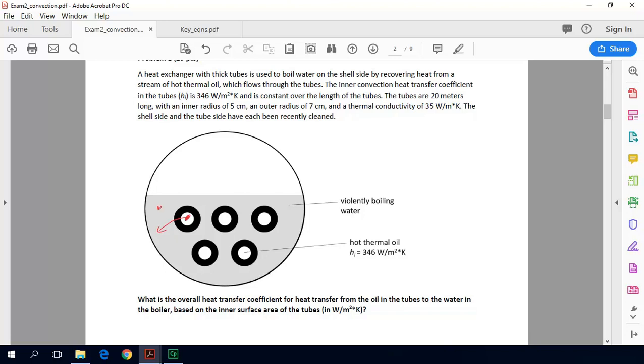It's delivered to the water, which makes this water boil. So we covered this in the last problem, but the heat is going to have to convect from the oil in the tubes to the inner tube wall. Then it will have to conduct through the tube wall, and then it will have to convect into the water.